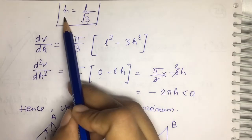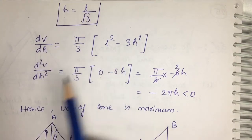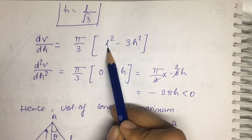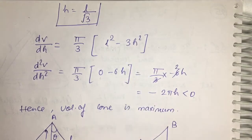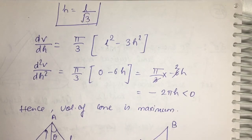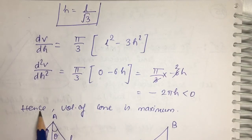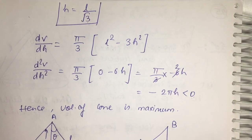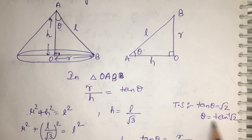Now we find the second derivative to check whether volume is maximum. The second derivative of V with respect to h gives a negative sign at the critical point, meaning d²V/dh² < 0. Hence the volume of the cone is maximum. The first part of the proof is done.